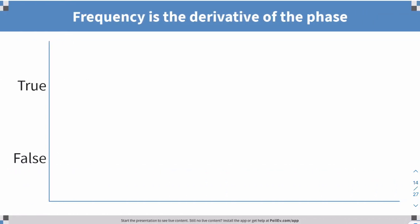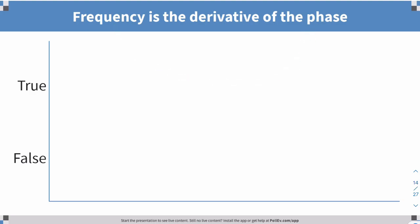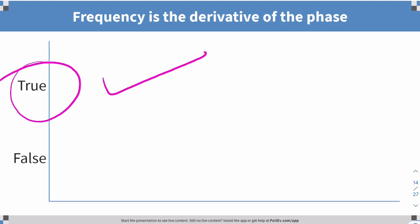Remember I said frequency and phase — one is the derivative of the other. Is frequency the derivative of phase, or is phase the derivative of frequency? Think about that because it's almost 50% of today's lecture. Frequency is the derivative of phase, and we'll look at why that's important.